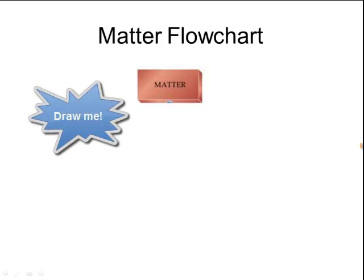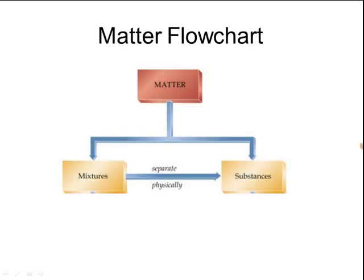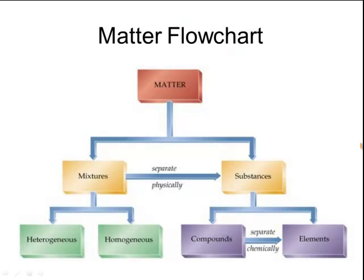I recommend writing this flow chart down in your notes. We start with matter — anything with mass and volume. Matter divides into two types: mixtures and pure substances. A pure substance is made up of only one type of compound, whereas a mixture is made up of two or more. A mixture can be separated physically into its substances, but a pure substance cannot. Pure substances break down into compounds or elements, and a compound can further separate into different elements. Mixtures are separated into heterogeneous mixtures, also called suspensions, and homogeneous mixtures, also called solutions.